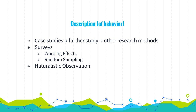Wording in surveys is very important — depending on word choice, it can provoke different responses. Random sampling is also very important in surveys. Basically, it's taking a sample that fairly represents a population, because any member of the population should have an equal chance to be chosen for the sample.